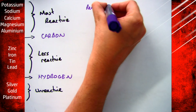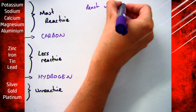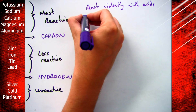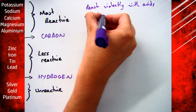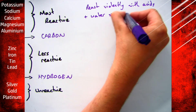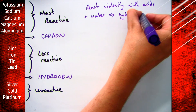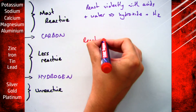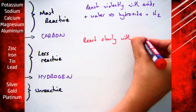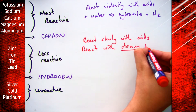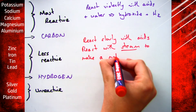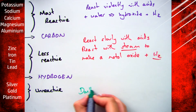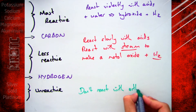Bit of a recap then. You should remember from one of the previous videos that the most reactive metals react violently with acids — as you can see, these are the ones on the left here — and they also react with water to make a hydroxide and a hydrogen. Your less reactive metals react slowly with acids and react with steam to make a metal oxide and again hydrogen gas, and your unreactive metals do not react with either.